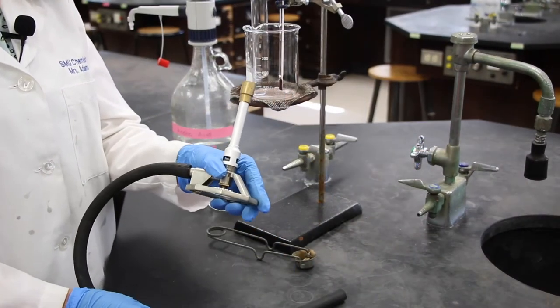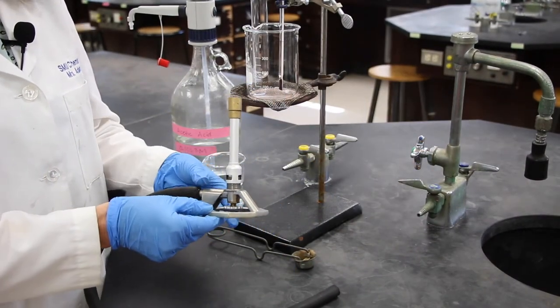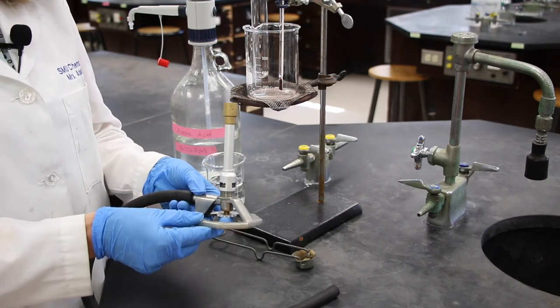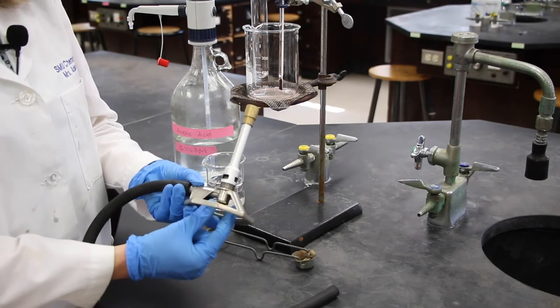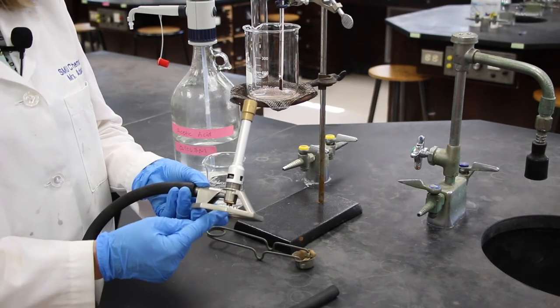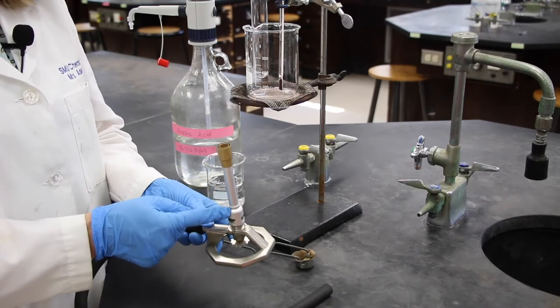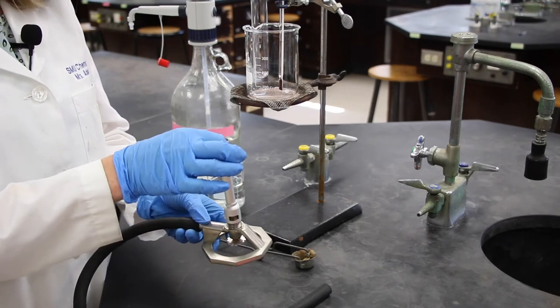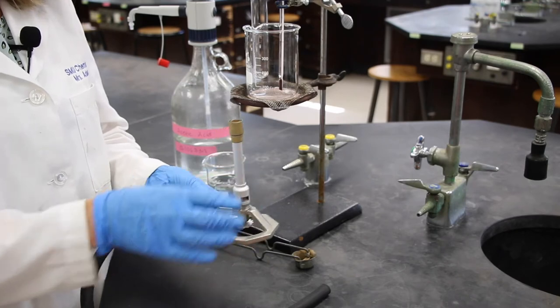The next piece of equipment that we'll use is the Bunsen burner. There are two parts to the Bunsen burner. There is the gas flow, and that is controlled by the knob at the bottom. And there is the air flow, and that is controlled by turning the barrel of the Bunsen burner.